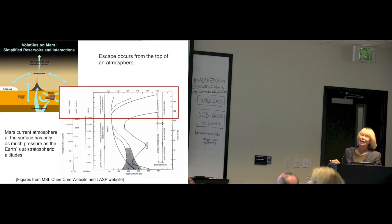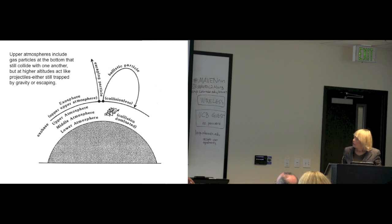The bottom line is that escape has to occur through the upper atmosphere, and that is MAVEN's domain. In fact, the whole atmosphere of Mars is almost an upper atmosphere from the Earth's perspective because the pressure on the surface is equivalent to the stratosphere pressure on Earth, approximately. Everyone appreciates by now that the Mars atmosphere is thin, cold, dry, and mainly CO2.